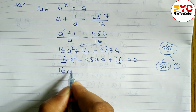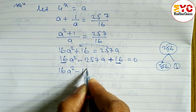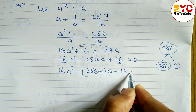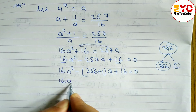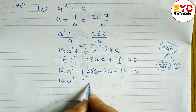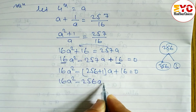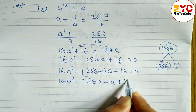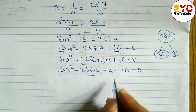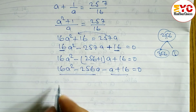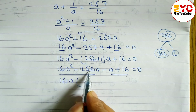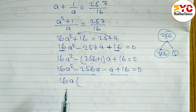So we split the middle term: 16a² - 256a - 1a + 16 = 0. From the first two terms we take common factor 16a, and from the last two terms we take common factor -1.